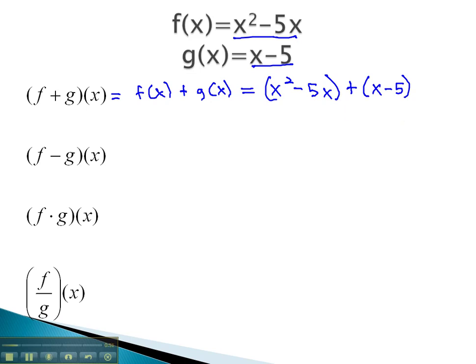These parentheses are very important depending on the operation we're doing. This problem, as we simplify, we simply have to combine like terms to get x squared minus 4x minus 5.